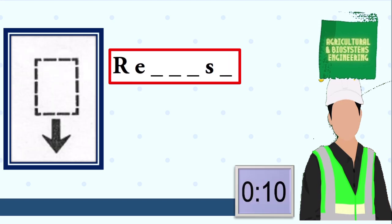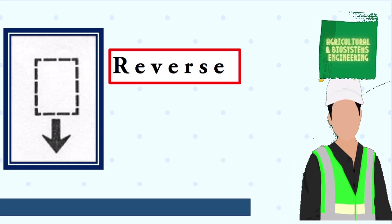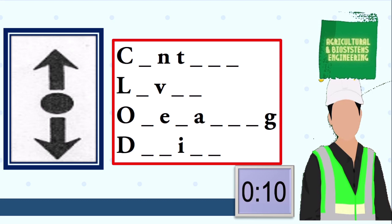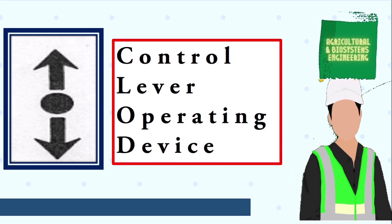Next symbol, your 10 seconds starts now. The answer is reverse. Next symbol, your 10 seconds starts now. The answer is control lever operating device.